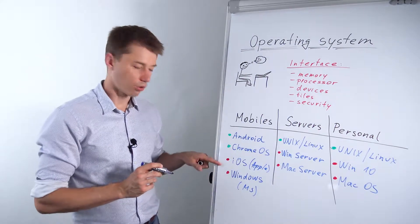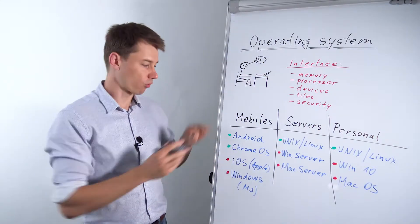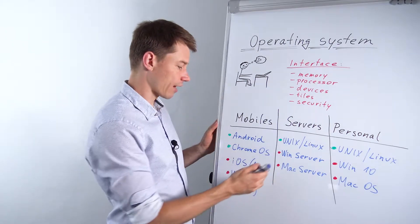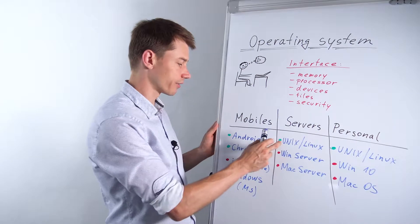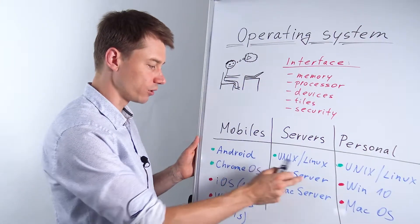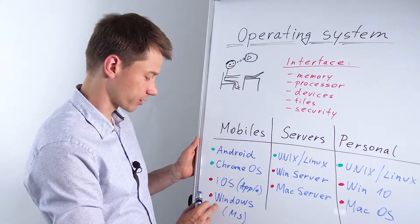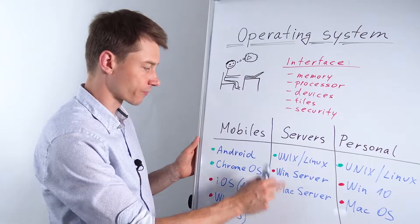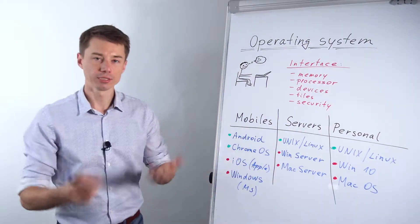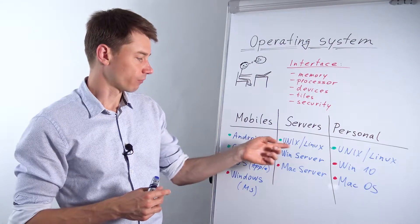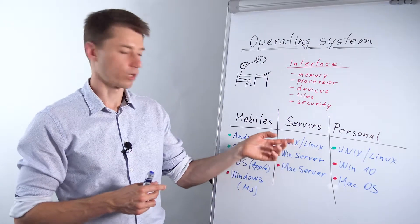Two closed operating systems for mobile. They also develop other operating systems, they slightly adjust their operating systems. For example they also have Windows server and Mac server. So Microsoft has Windows server, Apple has Mac server.